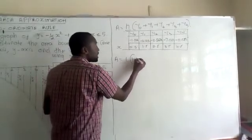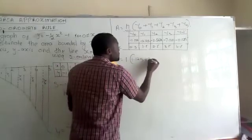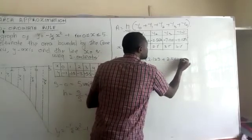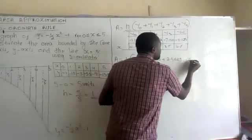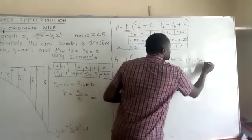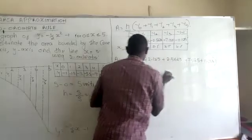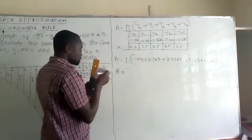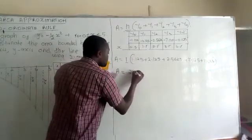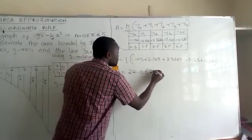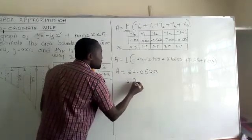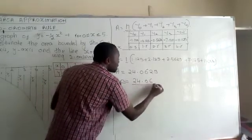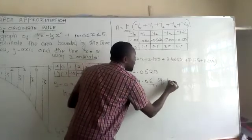And because this is 1, then the area is simply the sum of these ordinates, which is giving us a value of 24.0625, which is approximately 24.06 square units.